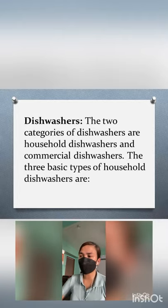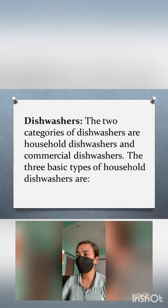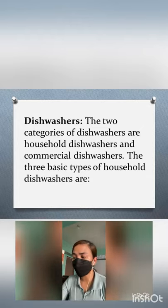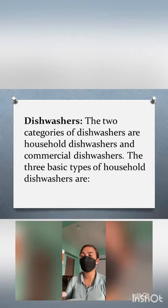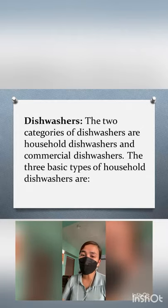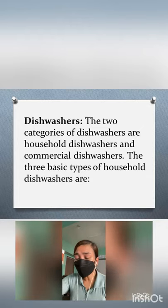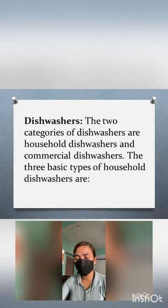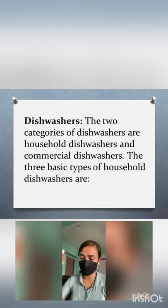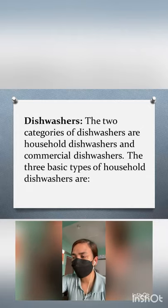Next, we have dishwashers. There are two categories: the household dishwasher and the commercial dishwasher. A dishwasher is a machine used to clean dishware and cutlery automatically. The household dishwasher is often used at home, while commercial dishwashers are industrial machines available in establishments such as hotels and restaurants, which have many dishes to wash.